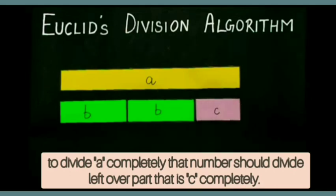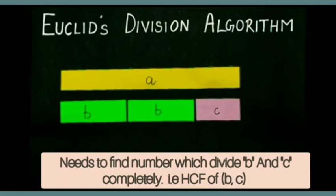We have to find the HCF of B and C. That will divide A completely as well as B completely.